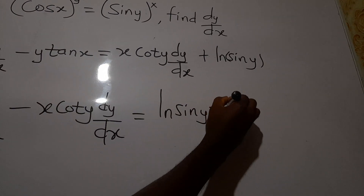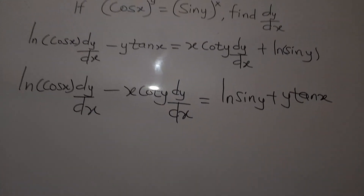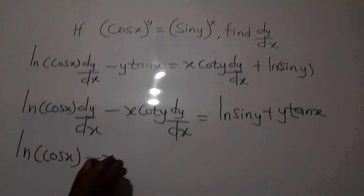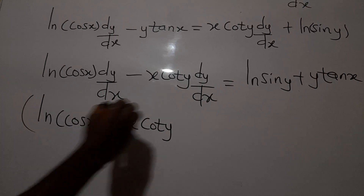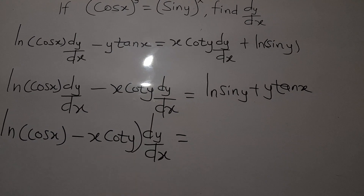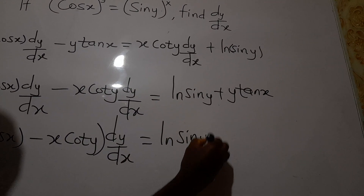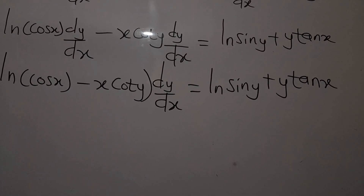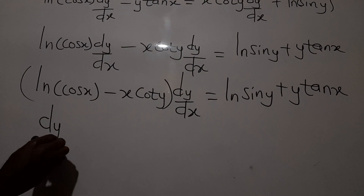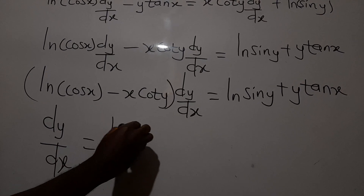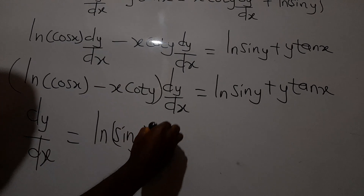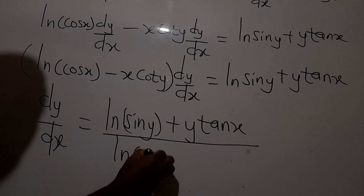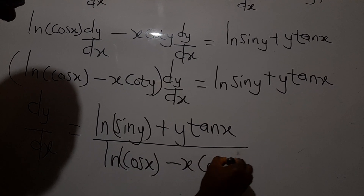Factoring out dy/dx from the left side gives: dy/dx·(ln(cos x) minus x·cot y) = ln(sin y) plus y·tan x. Therefore, dy/dx equals (ln(sin y) + y·tan x) over (ln(cos x) minus x·cot y).